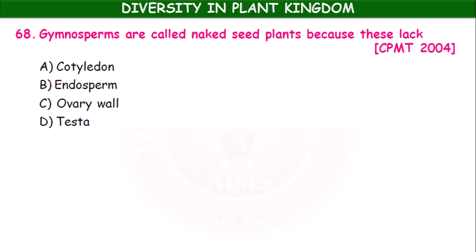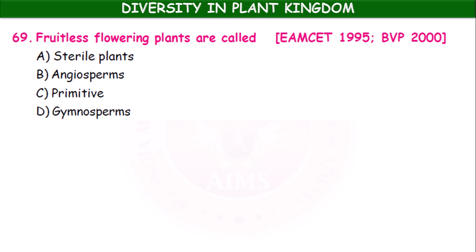Gymnosperms are called naked-seeded plants because they lack an ovary wall. The options were botrydon, endosperm, ovary wall, and testa — and they lack the ovary wall. Fruitless flowering plants are called gymnosperms.